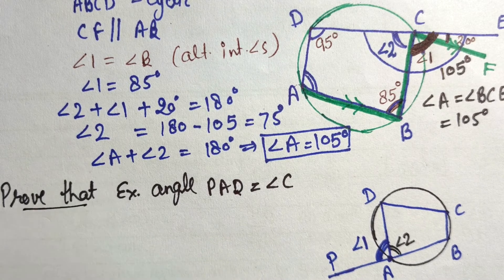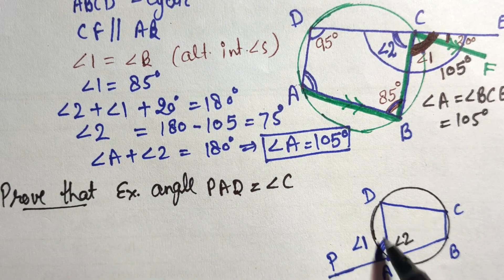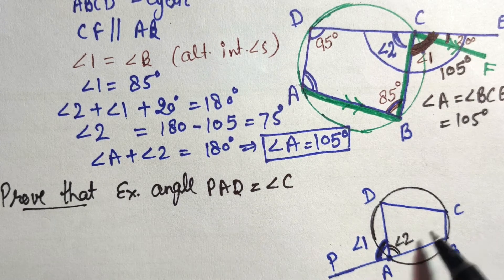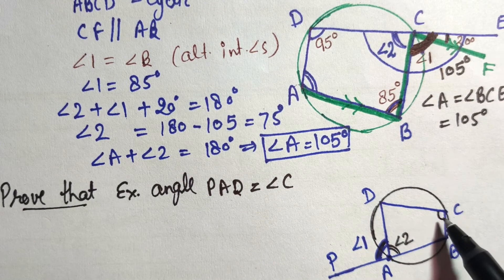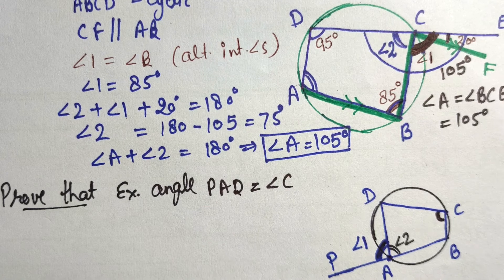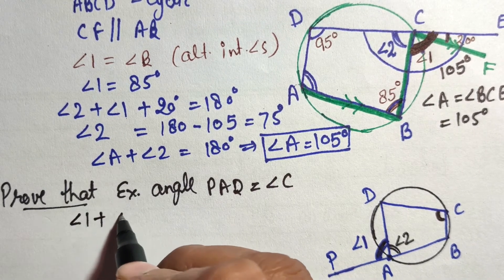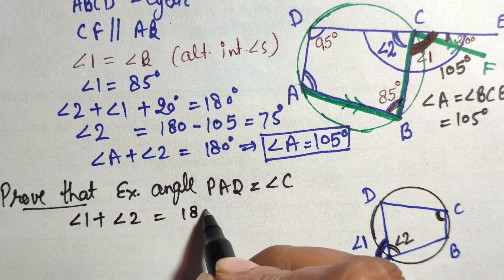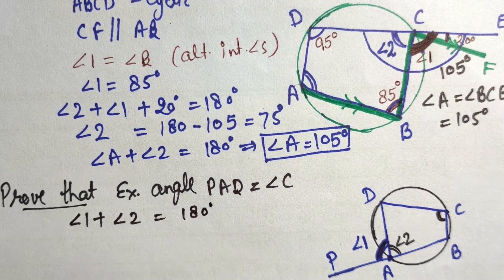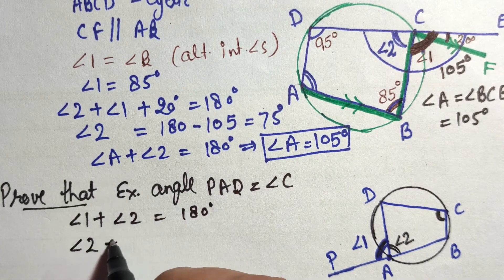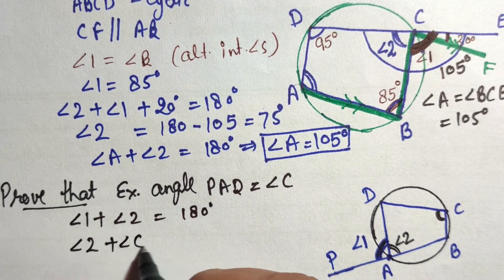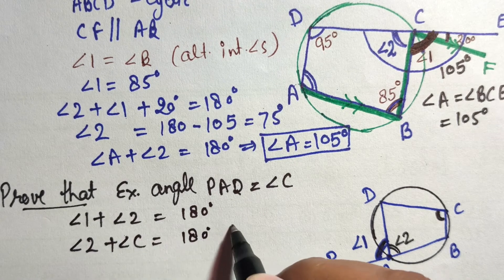In short proof: the exterior angle at D equals the interior opposite angle A. We know angle 1 plus angle A equals 180 from the linear pair, and angle 2 plus angle C equals 180 from the cyclic property. Combining these, angle 1 minus angle C equals zero, meaning the exterior angle equals the interior opposite angle. This is the standard property you can directly apply.